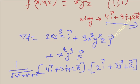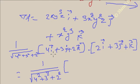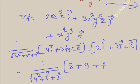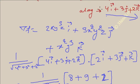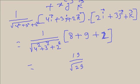The directional derivative is the dot product of del f and the unit vector: (4×2) + (3×3) + (2×1) = 8 + 9 + 2 = 19... giving a final answer of 29/√29. So that is the final value of the directional derivative of f along this vector.